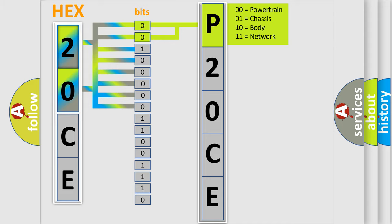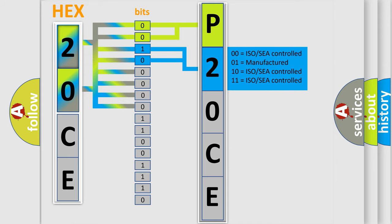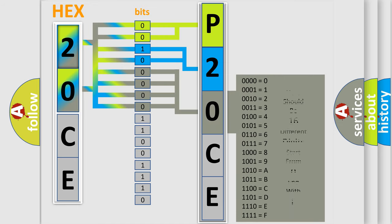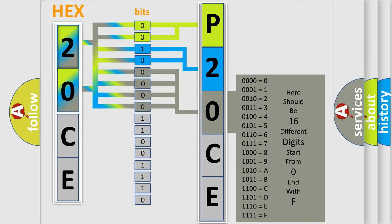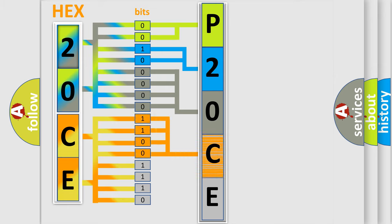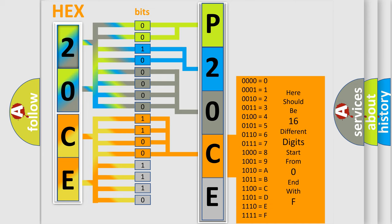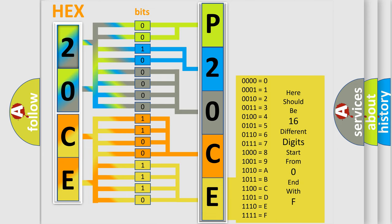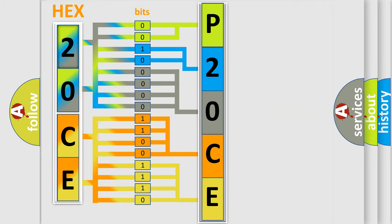The next two bits determine the second character. The last bits of the first byte define the third character of the code. The second byte is composed of a combination of eight bits. The first four bits determine the fourth character of the code, and the combination of the last four bits defines the fifth character. A single byte conceals 256 possible combinations.